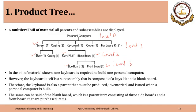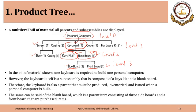In the bill of materials shown, one keyboard is required to build one personal computer. However, the keyboard itself is a sub-assembly composed of a keys kit and blank board — so the keyboard is also a parent that must be produced when a personal computer is built. We need a keyboard to have a personal computer, but to have a keyboard we need the keys kit and blank board. Similarly, to make the blank board, we need three side boards and one front board. This is multi-level bill of material.